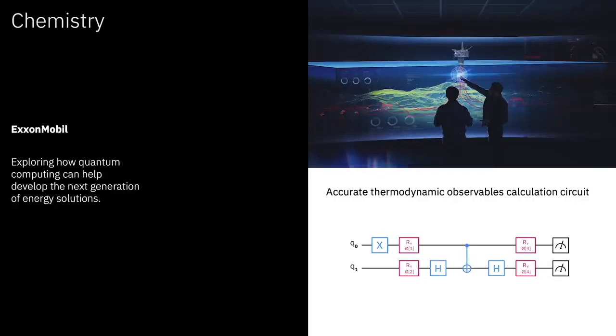Or let's take the case still staying in the field of chemistry and materials of Exxon Mobil. In this case, they're very interested in modeling the thermal reaction modeling for petrochemical R&D. And here we're seeing some of the examples of the circuits that are being used to perform these calculations. And by the way, we develop these circuits through a collaboration between IBM and our partners as we pursue this work.